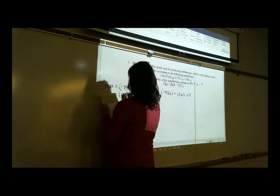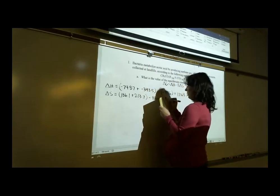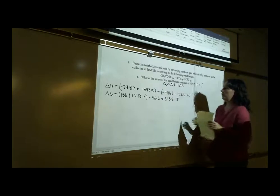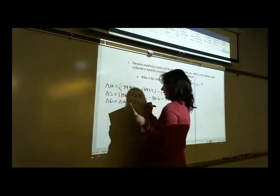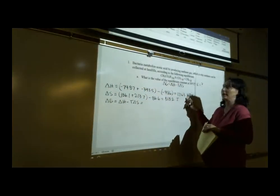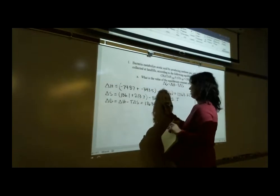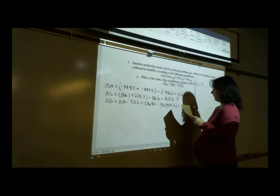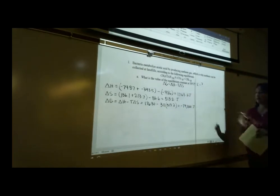For ΔS, I got 186.1 plus 213.7 minus 86.6, which came out to 313.2 joules. Those come out in different units, so you'll need to convert them before plugging into the ΔG expression. I converted kilojoules to joules because I'll need the answer in joules for the next part. So ΔG = 17,630 minus (311 K × 313.2), giving negative 79,800 joules.